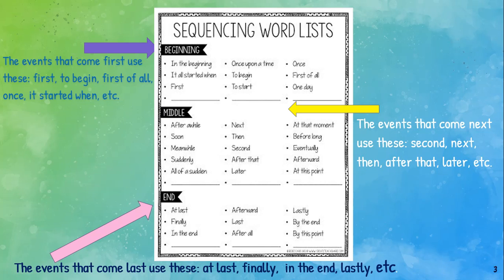When we get to the middle, there's a lot more because your middle can be big or small. The events that happen next, after the beginning, use words like: after a while, soon, meanwhile, suddenly, all of a sudden, next, then, second, after that, later, at that moment, before long, eventually, afterward, and at this point.